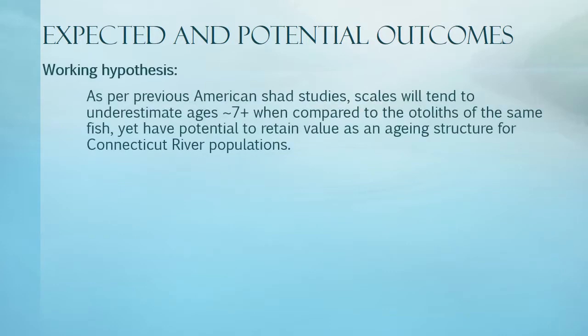Previous studies of known-age fish have found that scale-derived ages tend to underestimate shad around age 7, slightly after the critical point of sexual maturity. Connecticut's shad data has historically been obtained through the use of scales, and the State Marine Fisheries Division houses a database of scale-aged fish dating back to the early 1980s. More recently, otoliths have been shown to be much more accurate. However, there are many advantages to using scales, and I hope to be able to justify continued use.